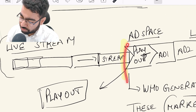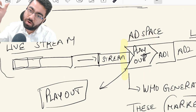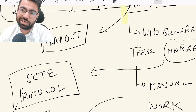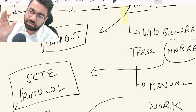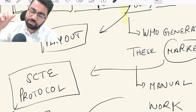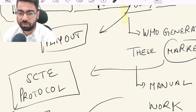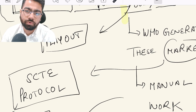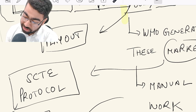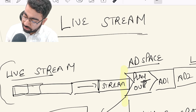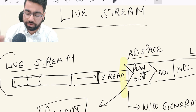Wherever this stream is going — for example, it first generates from the camera at the stadium — the people sitting in the stadium insert these SCTE markers into the live stream. Then this live stream goes to whatever channel you are watching, or Hotstar, which then produces this stream to you and inserts ads at the marker points it finds.